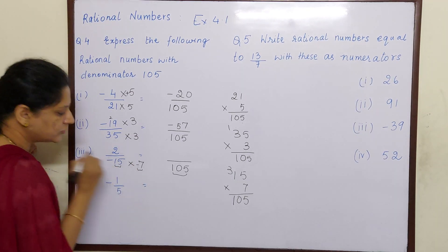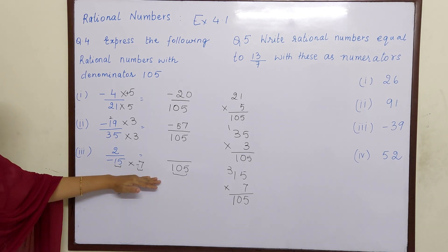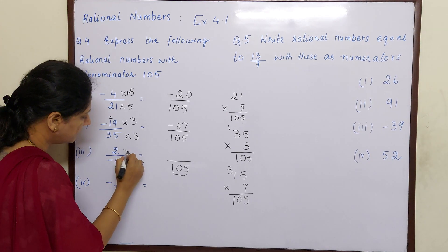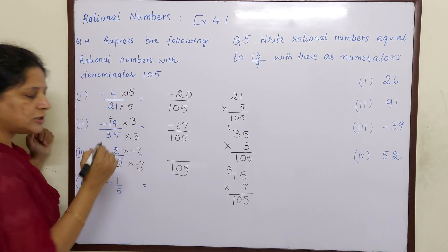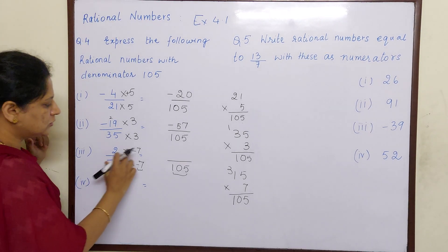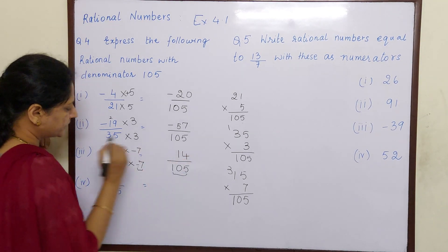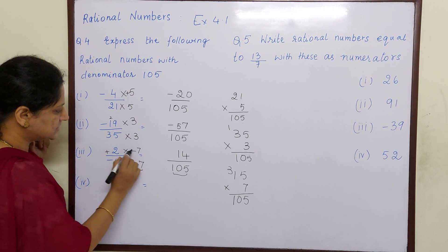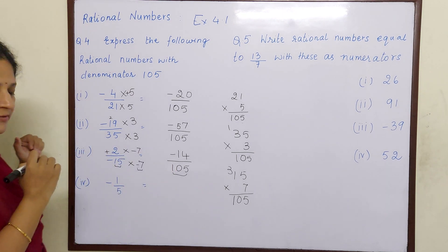So here you have to put minus. So if you are multiplying denominator with minus 7, you have to multiply the numerator also with minus 7. 2 sevens are 14 and this is plus. So plus into minus is minus 14.